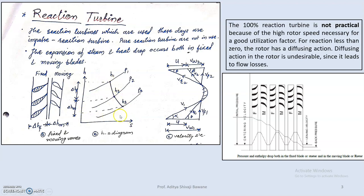During this expansion process, pressure drops across both fixed and moving blades. For velocity, during the fixed blade velocity increases since these fixed blades act as a nozzle. Then for the moving blade, velocity is absorbed by the moving blade due to impulse-momentum action and velocity decreases. Then again across the next fixed blade, velocity increases.